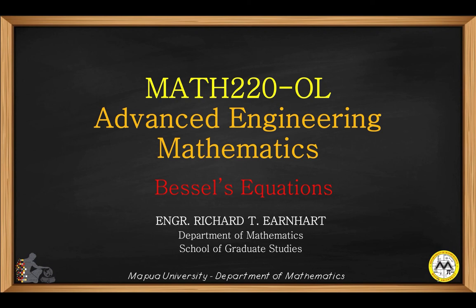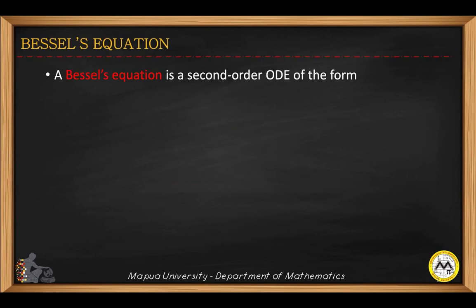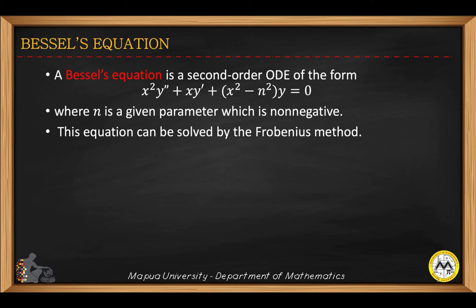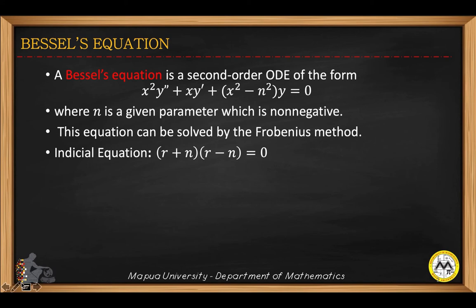In this video lecture, we're going to discuss the solution to Bessel's equation. A Bessel equation is a second-order ordinary differential equation of the following form: x squared y double prime plus x y prime plus (x squared minus n squared) multiplied by y equals zero. Here n is a given non-negative parameter. The equation can be solved by the Frobenius method because x is a regular singular point. The indicial equation corresponding to the power series solution will be (r plus n)(r minus n) equals zero, and the roots are n and negative n.